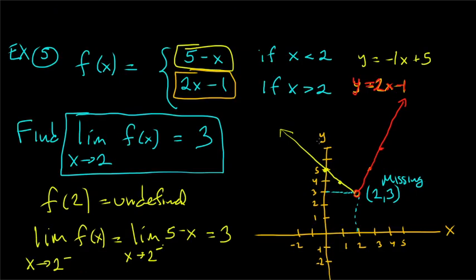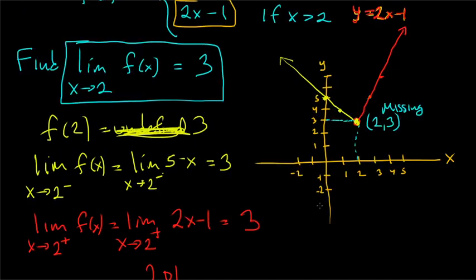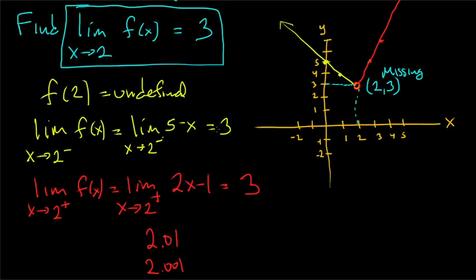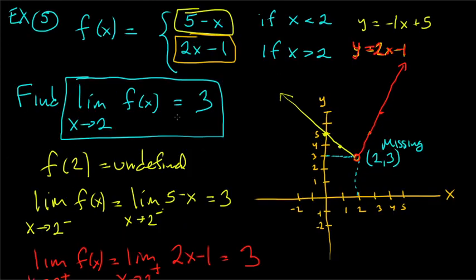It wouldn't have mattered whether f(2) equals 3 or is undefined — that does not change the limit. In both cases the limit is 3. The left-handed limit and the right-handed limit agreed, so the limit equals 3. That's the idea of left-handed and right-handed limits.